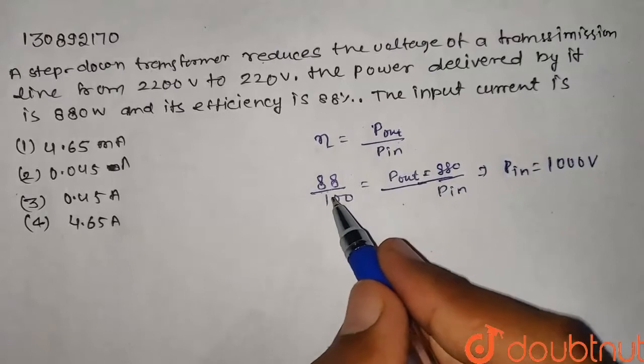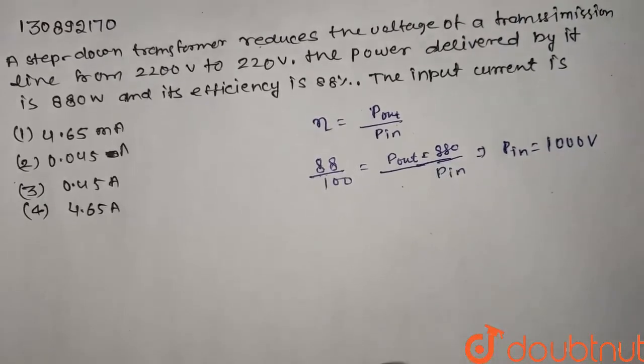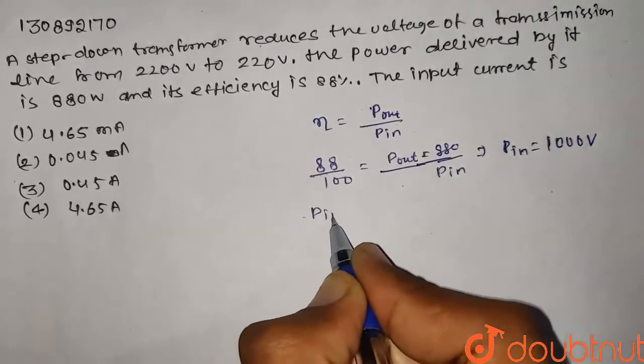Now we can calculate the input current. P input equals I input times the input voltage.